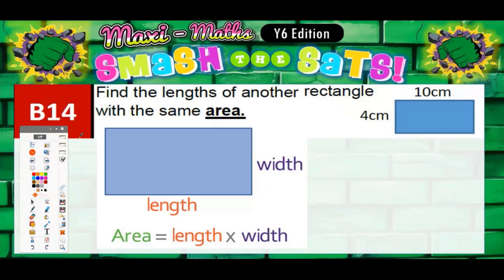Question 14: find the length of another rectangle with the same area. We can't do that until we find the area of this rectangle. Area is length times width, so we've got L times W. We've got 10 for the length, 4 for the width. 10 times 4 is 40 centimetres squared.